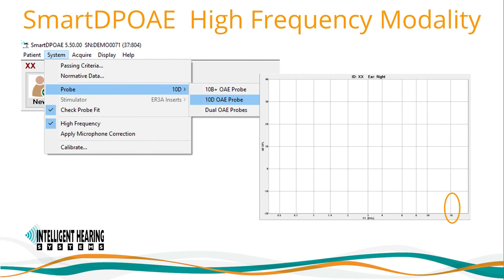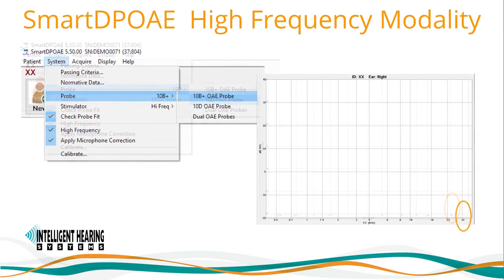The Smart DPoAE software offers a high-frequency modality. Clinically, it can be used for ototoxicity monitoring using a 10D probe. To enable this mode, activate the high-frequency modality in the system menu, which allows testing F2s up to 16 kHz. The DPgram will expand from the standard 12 kHz to the 16 kHz DPgram. For animal researchers, a 10B-plus probe microphone with applied microphone corrections and special animal-only high-frequency transducers are set up to test up to 32 kHz. The parameters menu will allow for the expanded frequency range.